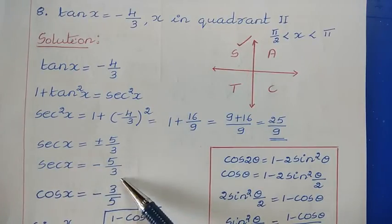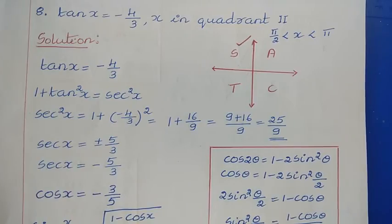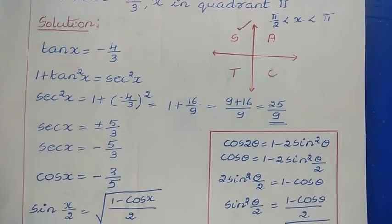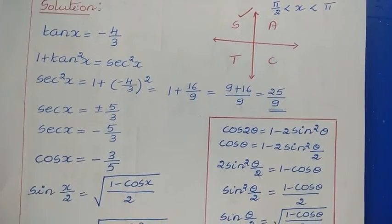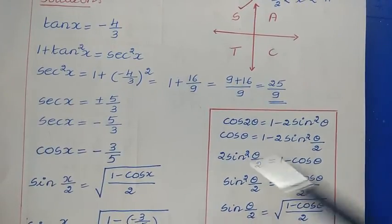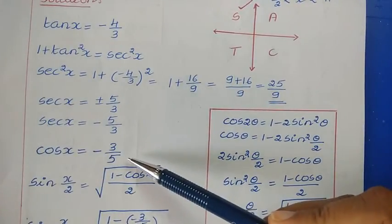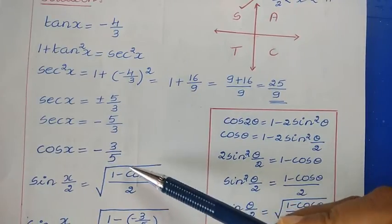If sec x = −5/3, then cos x = 1/sec x = −3/5. So cos x = −3/5.